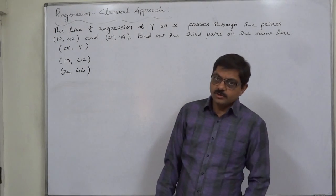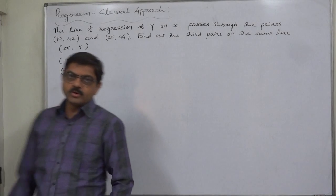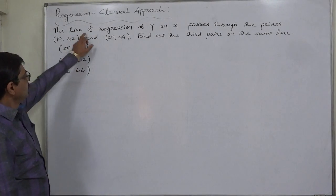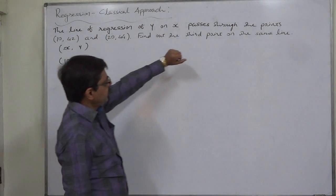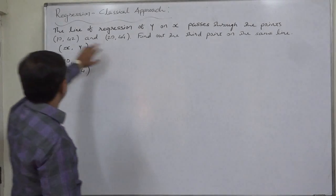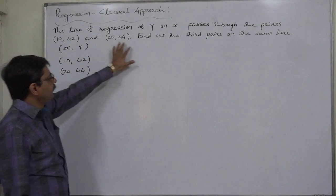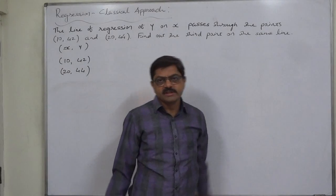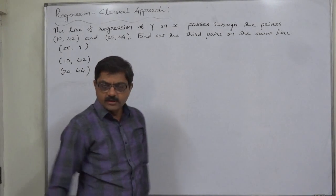Hello and welcome. Regression, linear regression, classical approach. The line of regression of y on x passes through the points (10, 42) and (20, 44). Find out the third point on the same line. We can solve this problem in so many ways.